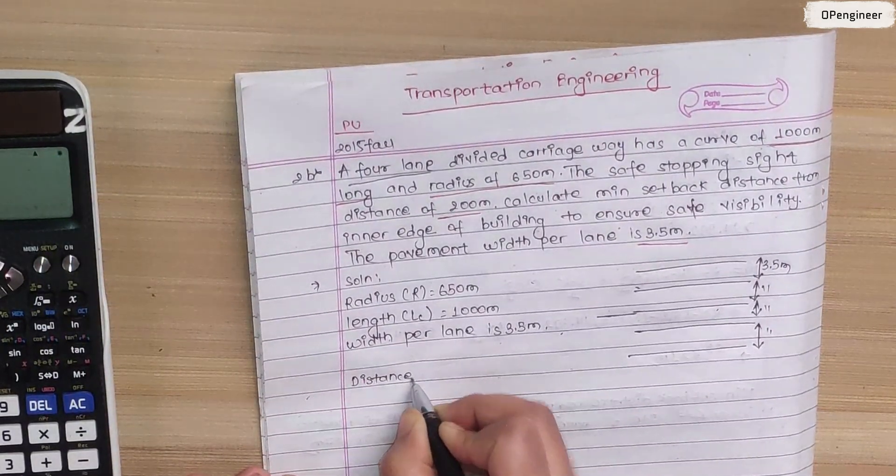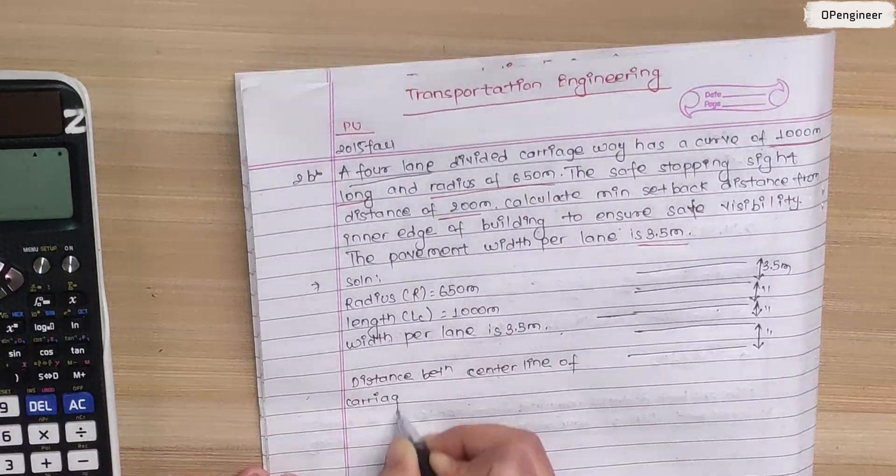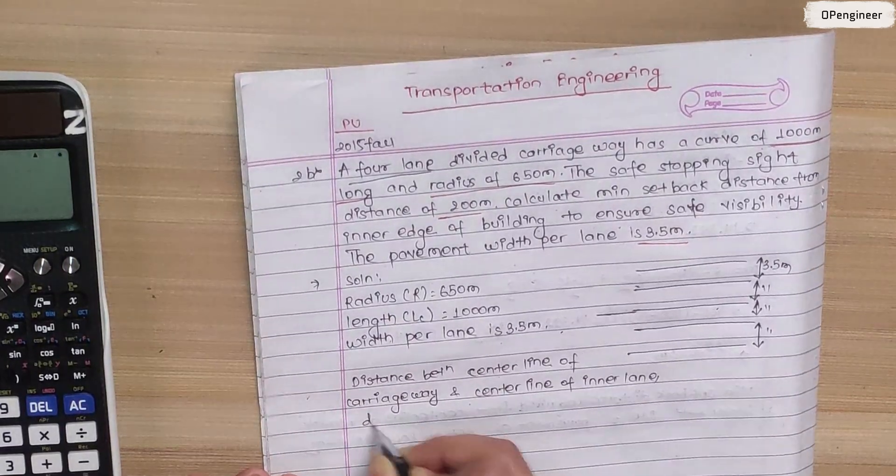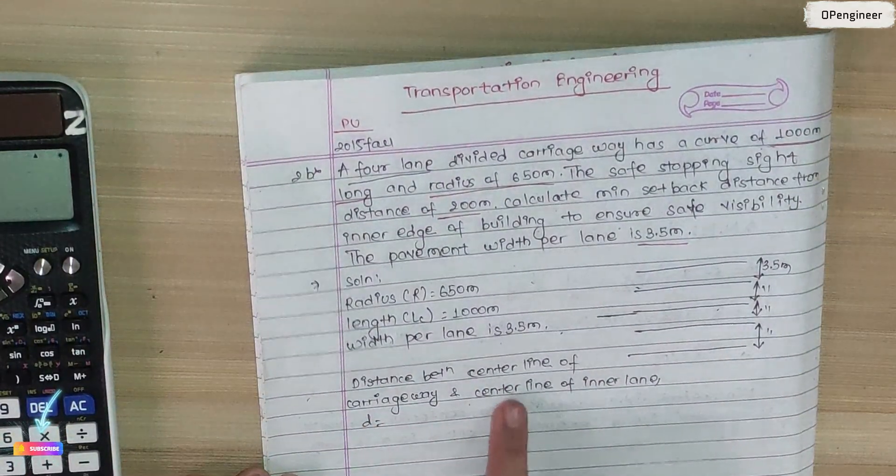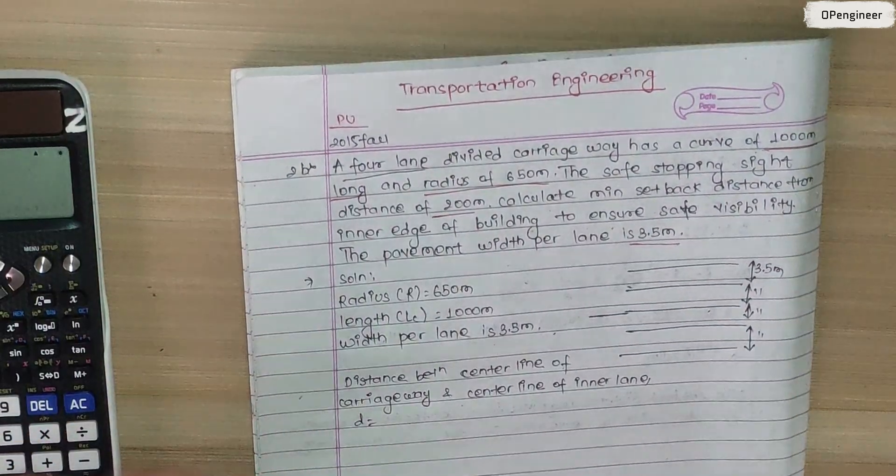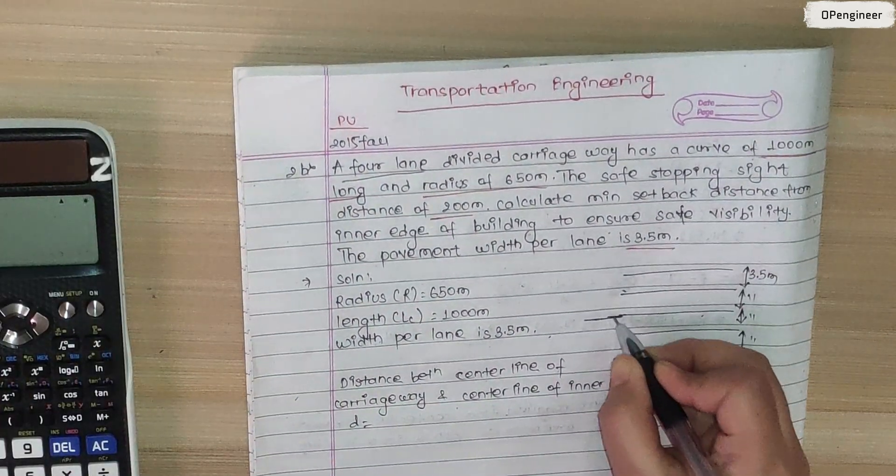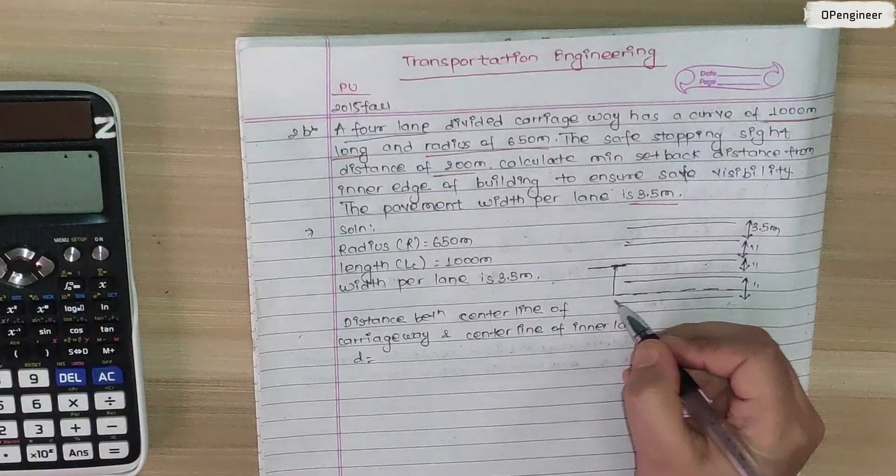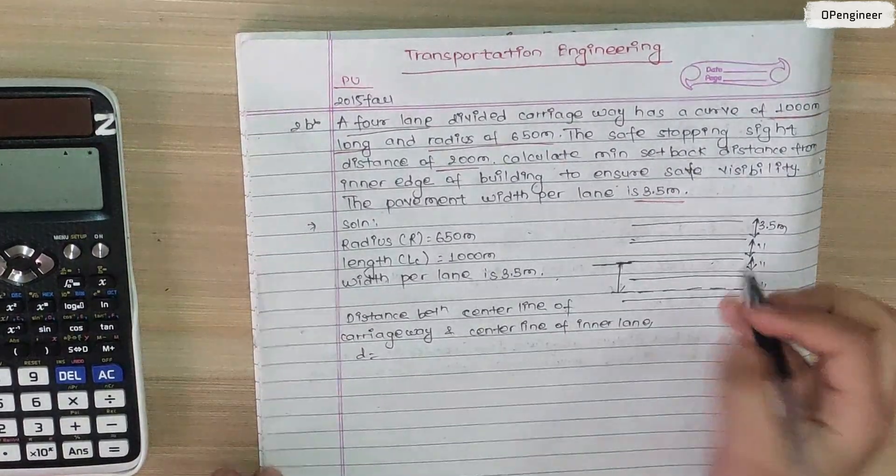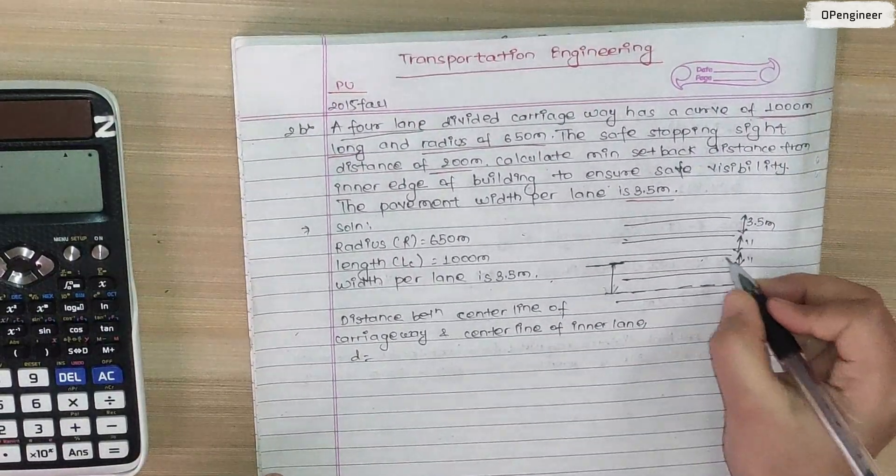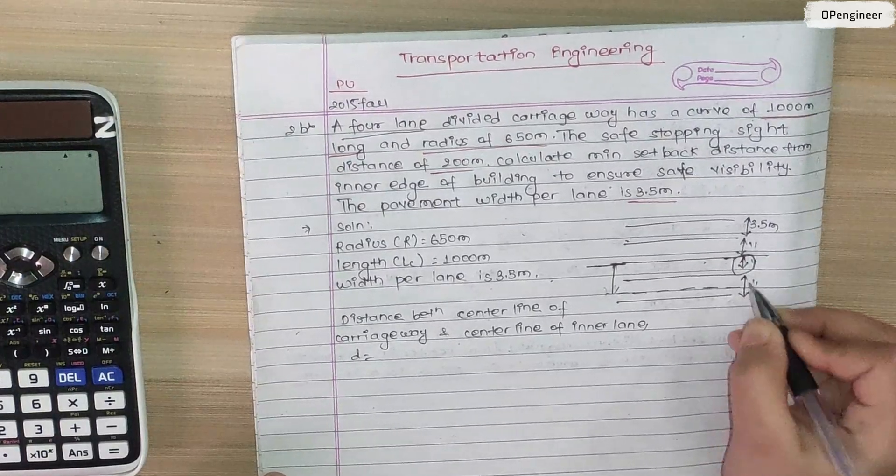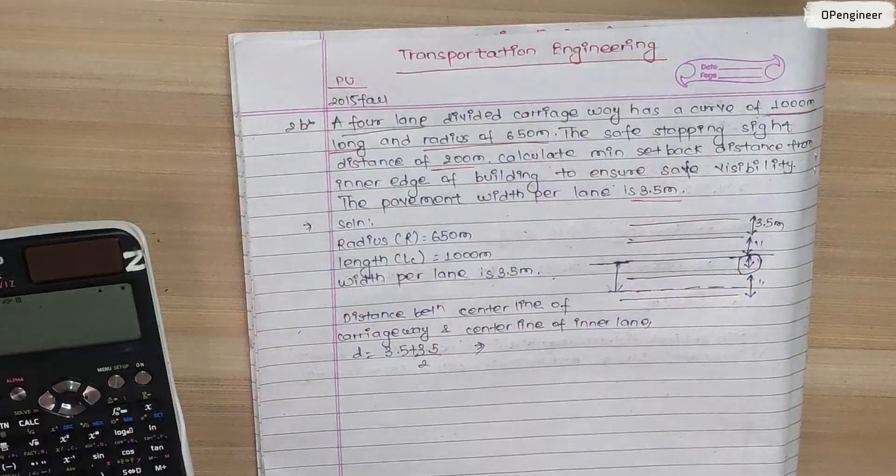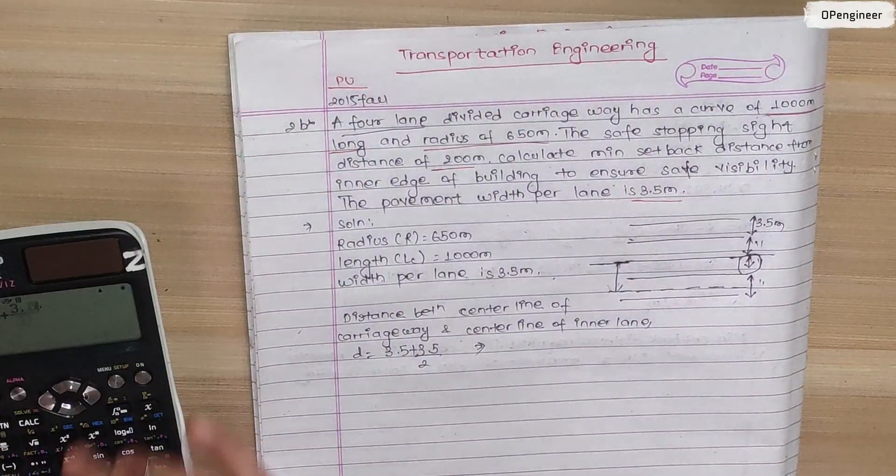First, calculate the distance between center line of carriageway and center line of inner lane. The first lane is 3.5 meters plus half the lane, which is 3.5 by 2.